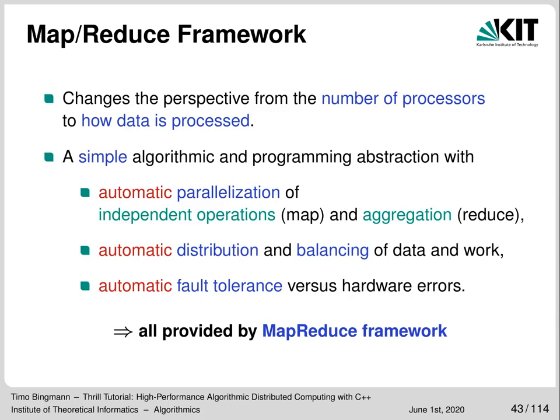What MapReduce does differently from MPI is to free the user from thinking about individual processors. The MapReduce framework is supposed to provide automatic parallelization, automatic data distribution and load balancing, and automatic fault tolerance. On one hand, this makes the model easy and attractive. On the other hand, it makes the framework's work very hard — that is why many MapReduce frameworks appear to be slow, as they have to guess correctly how to automatically fulfill all of these expectations.